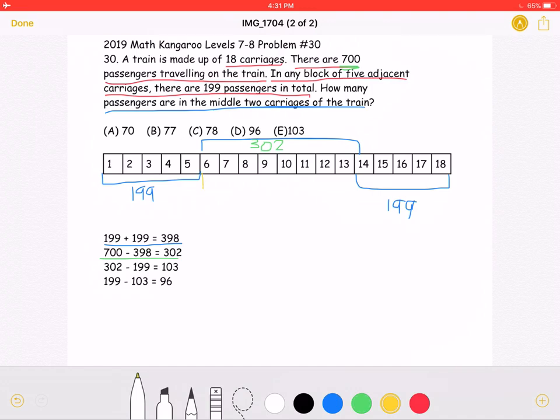Again, we know that each block of 5 is 199. However, as you can see, these 2 blocks overlap. Each block is 199. But they do have this overlap, which is what we're trying to find, the middle 2 carriages right here.